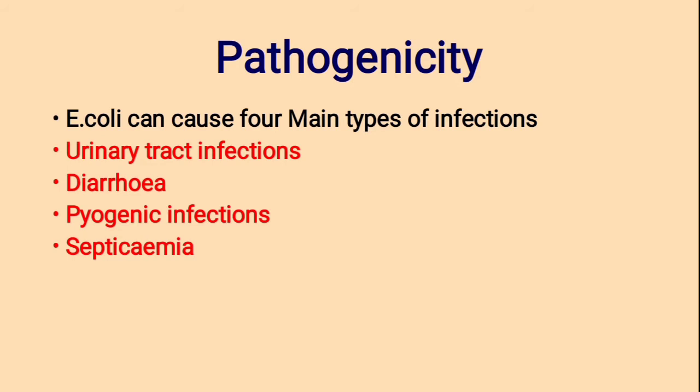Pathogenicity of E. coli — pathogenicity means causing different types of diseases. E. coli can cause four main types of infections: first, urinary tract infection; second, diarrhea; third, pyogenic infections — pus-related infections; fourth, septicemia — blood poisoning by bacteria.